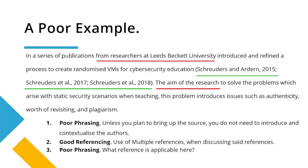So here's our poor example. From this small paragraph there are three points I want to bring up — make sure you have a read of this first before we get into it. The first point: the context for this reference is rather verbose. Unless you're making a point about Leeds Beckett, there's no need to refer to the actual university. You just need to say something like, 'In a series of publications, a process to create randomised VMs was introduced.'